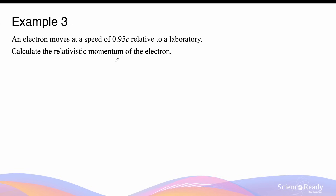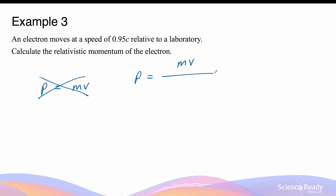An electron moves at a speed of 0.95c relative to the laboratory. Calculate its relativistic momentum. The momentum of an object approaching a relativistic velocity — a significant fraction of the speed of light — is no longer given by the simple classical equation p equals mv. Instead it is given by mv divided by the square root of 1 minus v squared divided by c squared.